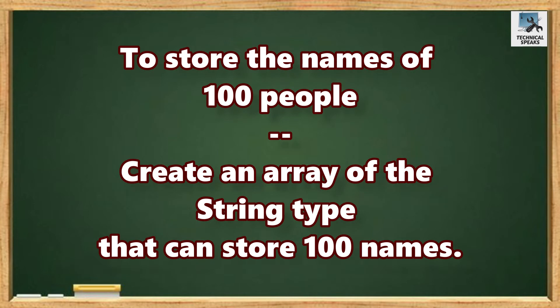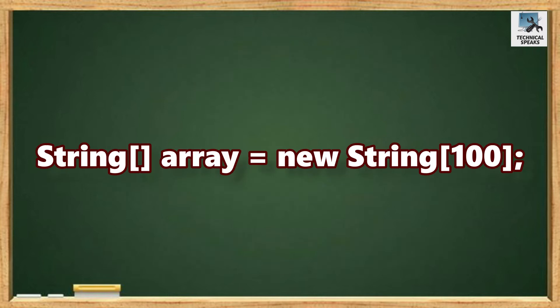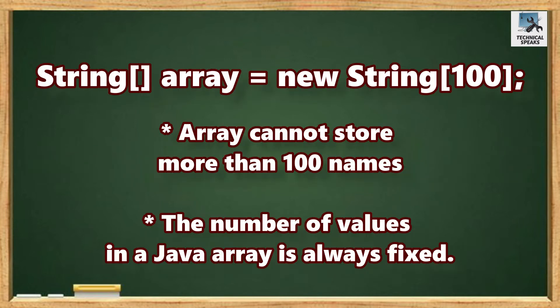then we can create an array of the String type that can store 100 names. It will be like String array equals new String and inside the square braces 100. In this case, the array cannot store more than 100 names.